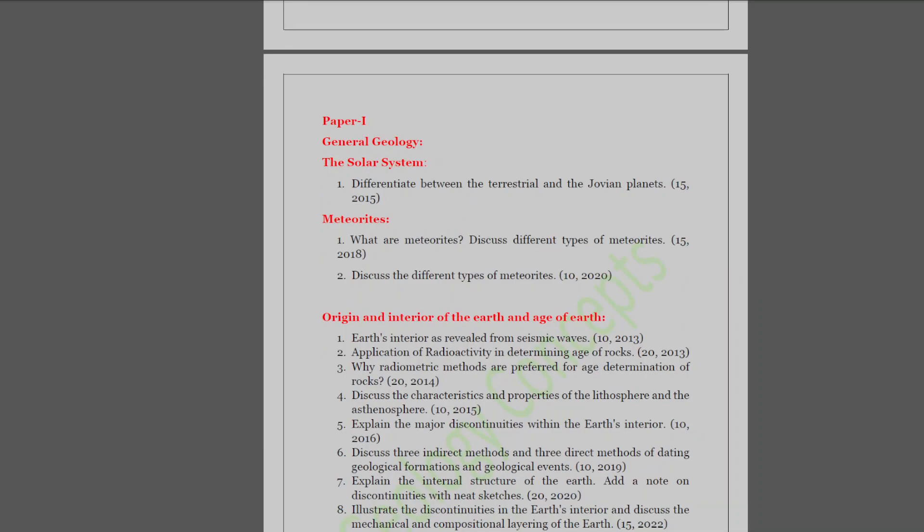So the first topic is the solar system. As you can see, there is just one question that has been asked in the mains about the differentiation between the terrestrial and the Jovian planets. So very clearly UPSC's focus is not on the theoretical portions. You can clearly observe a trend where UPSC is focusing more and more on conceptual topics and interlinkages between them. This particular question can be easily answered where you can write the basis of differentiation in your introduction, then differentiate based on size and mass, composition, density, satellites, atmosphere and so on, and give a summary at the end as your conclusion.